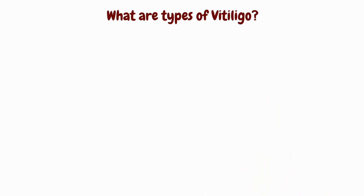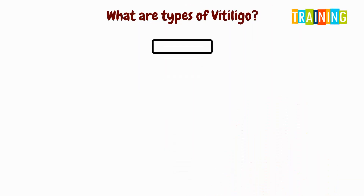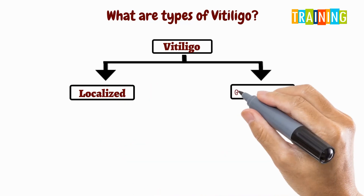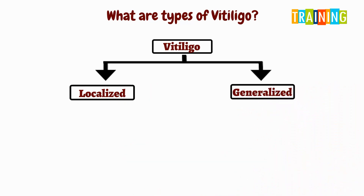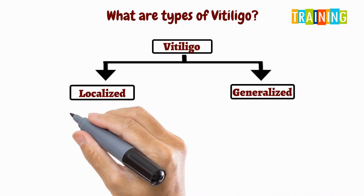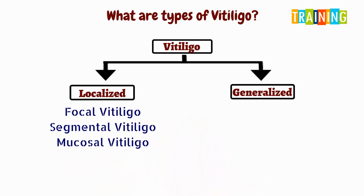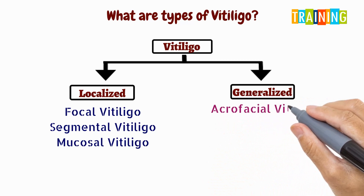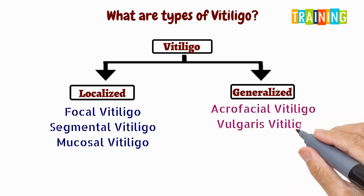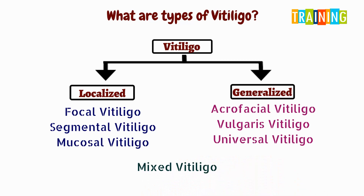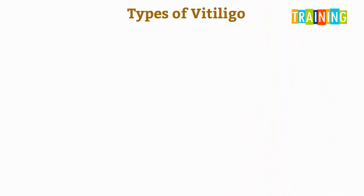Vitiligo is a skin disease where there are white patches on the skin. Vitiligo is broadly divided into two categories: localized vitiligo and generalized vitiligo. Types of localized vitiligo include focal vitiligo, segmental vitiligo, and mucosal vitiligo. In the generalized category, there are acrofacial vitiligo, vulgaris vitiligo, and universal vitiligo. There is also something known as mixed vitiligo.